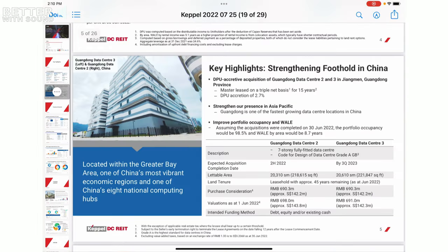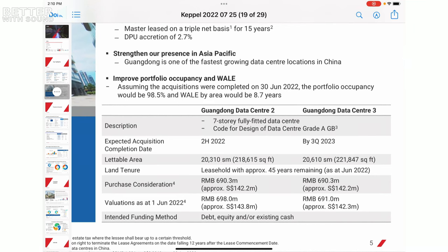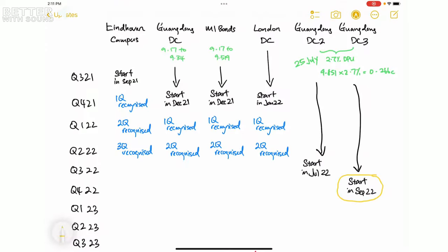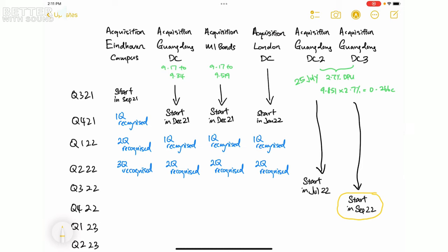want to make a correction because the Guangdong DC3, it states that if you can see down here, the expected acquisition completion date is the third quarter of 2023, right? So let this sink in for like one or two seconds. Okay, so this is the first point I wanted to make in this video. So the second point is, if you have watched the 10.37 cents video I made previously, so whatever...